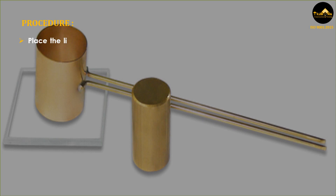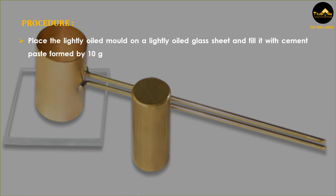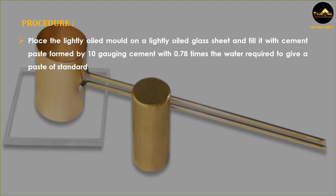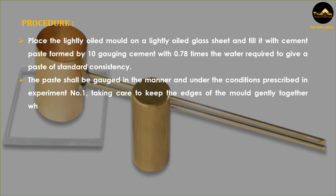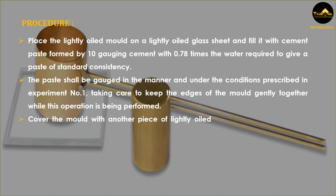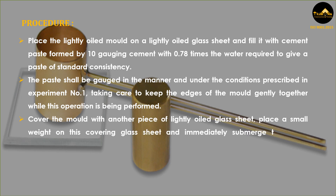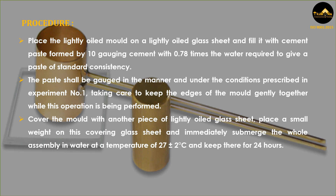Place the lightly oiled mold on a lightly oiled glass sheet and fill it with cement paste formed by gauging cement with 0.78 times the water required to give a paste of standard consistency. The paste shall be gauged in the manner and under the conditions prescribed in experiment number 1, taking care to keep the edges of the mold gently together while this operation is being performed. Cover the mold with another piece of lightly oiled glass sheet, place a small weight on this covering glass sheet, and immediately submerge the whole assembly in water at a temperature of 27 ± 2°C and keep there for 24 hours.